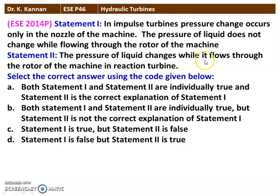The second statement: the pressure of the liquid changes while it flows through the rotor of the machine in the reaction turbine. This statement is also true. In the reaction turbine, pressure drop takes place both in the nozzle and the rotor. The correct option is that both Statement 1 and Statement 2 are individually true, but Statement 2 is not the correct explanation for Statement 1.